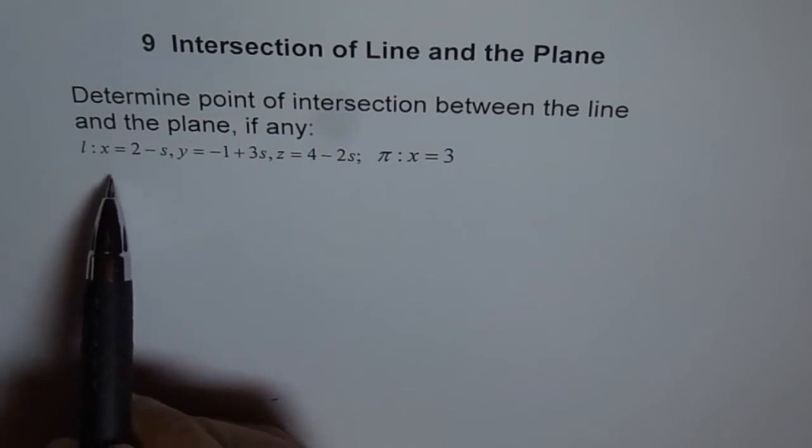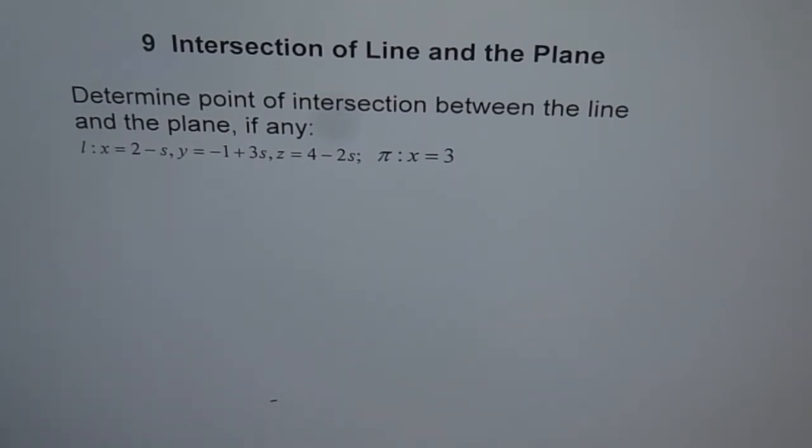The line here is given in parametric form: x equals 2 minus s, y equals minus 1 plus 3s, z equals 4 minus 2s, and the equation of our plane is x equals 3.